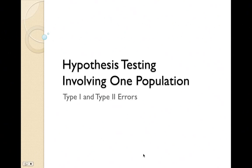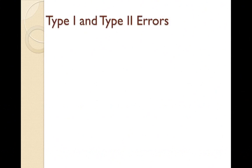We're going to continue our work on hypothesis testing involving one population. In this lecture we're going to do a few more examples, very similar to the examples in the last lecture, except this time we're going to take a deeper look at type 1 and type 2 errors and what they mean — the same kind of hypothesis tests as before, but taken one step further.